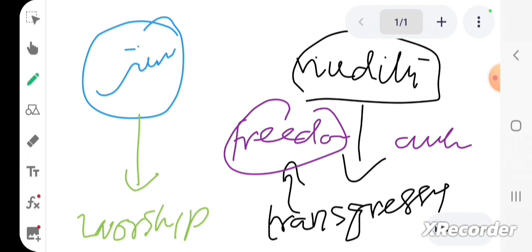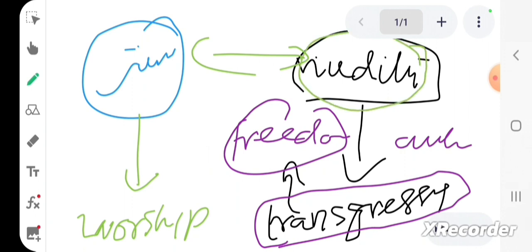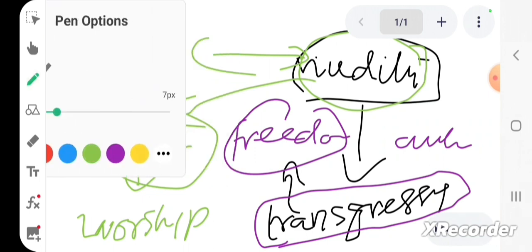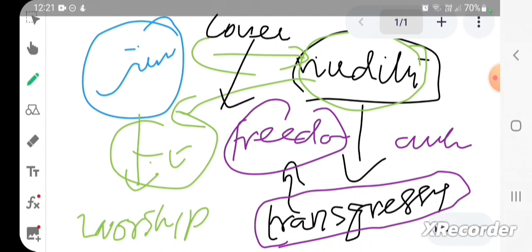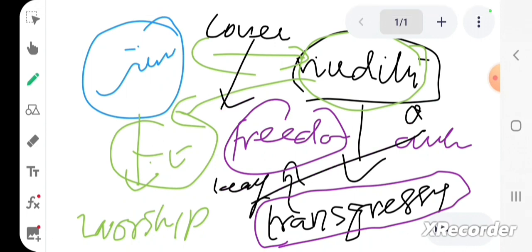They transgressed against Allah subhanahu wa ta'ala. What happened? Nudity. But they returned to Allah subhanahu wa ta'ala, they made tawbah, and they tried to cover themselves with the leaf of the tree.